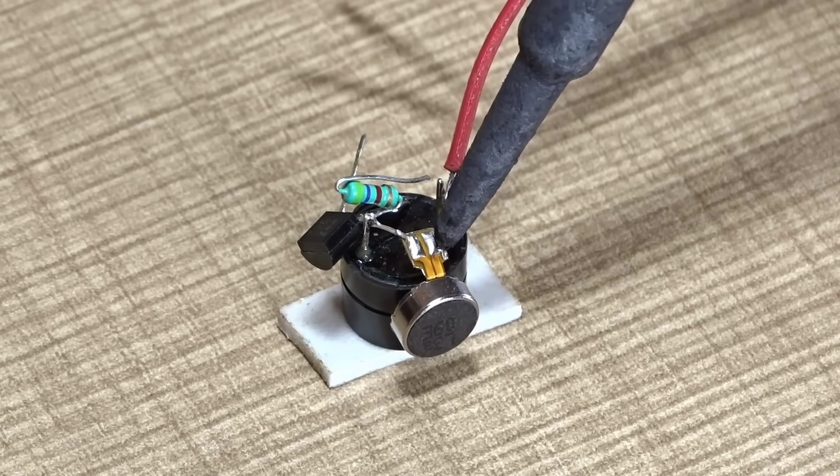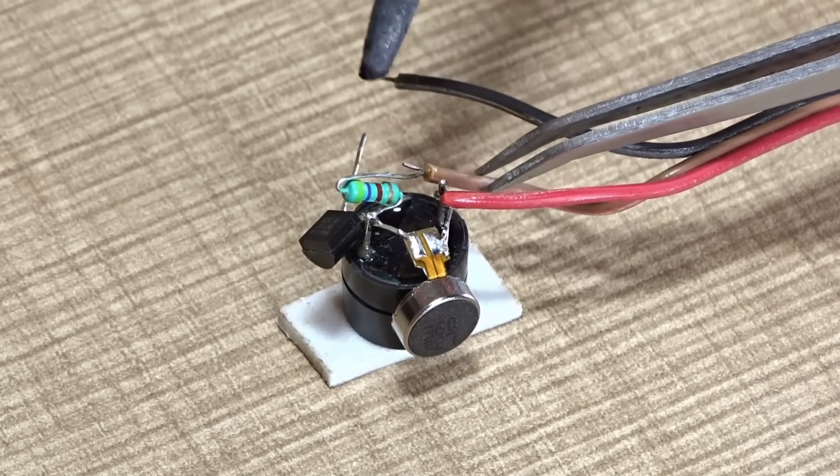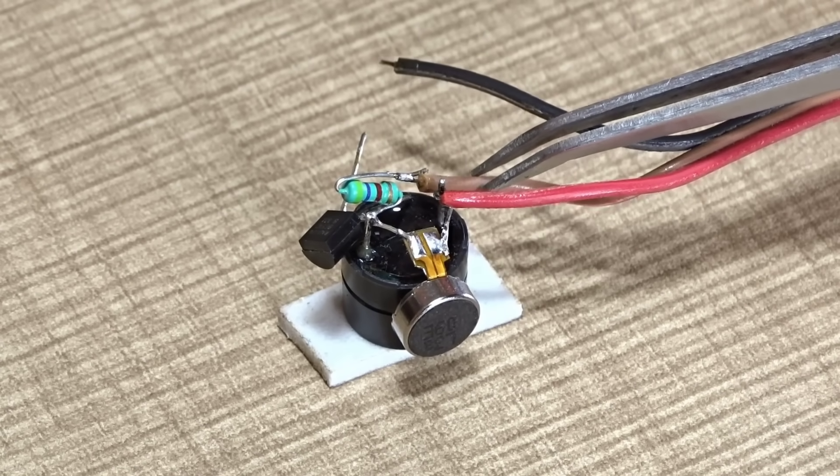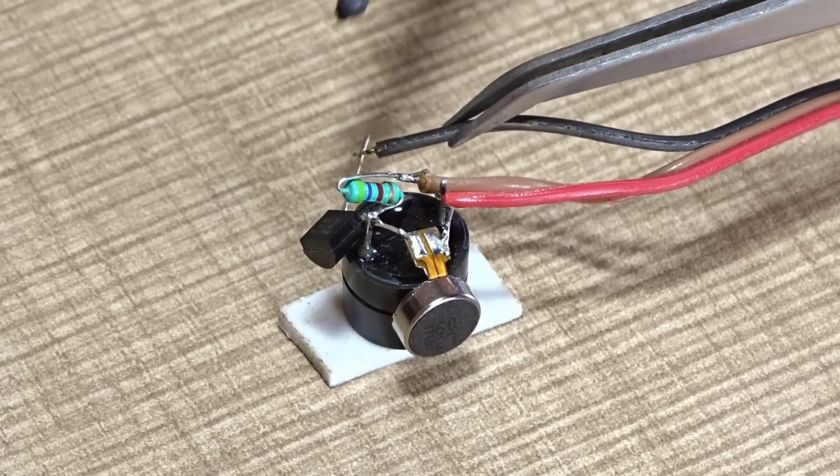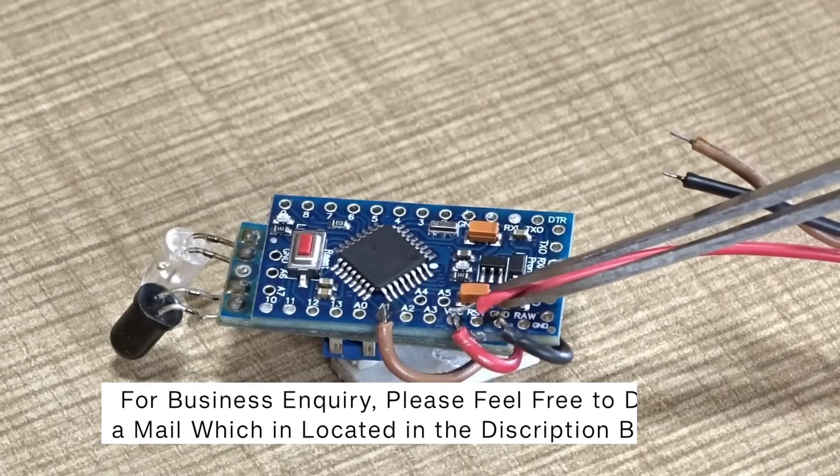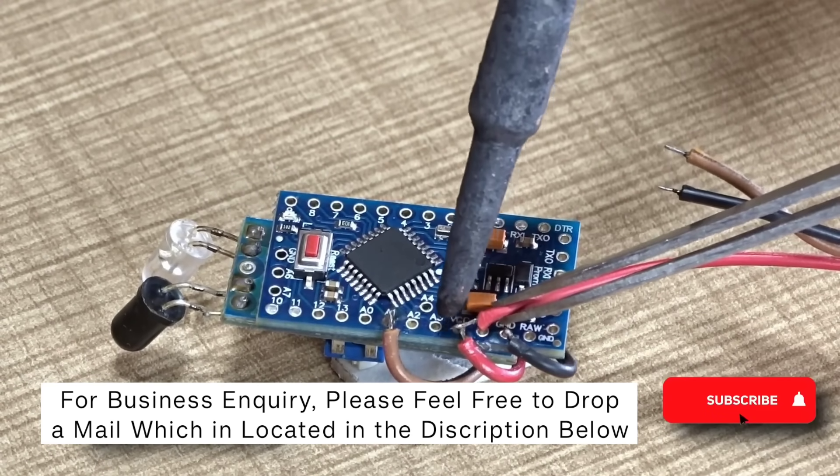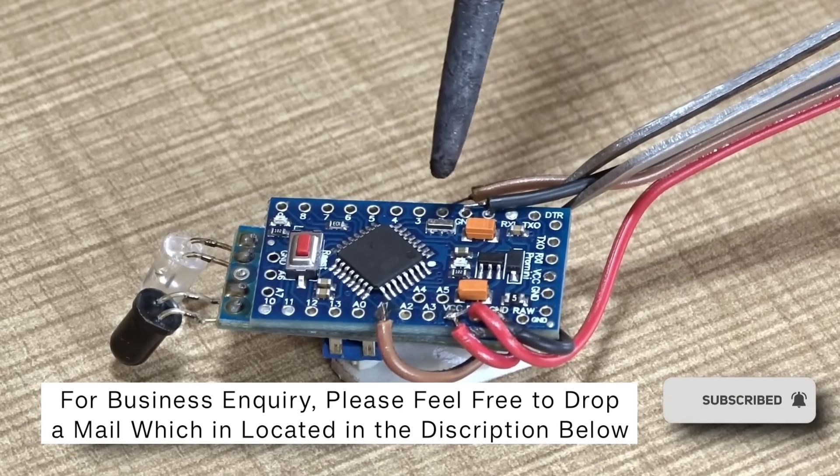Once the physical attachment is done, we move ahead to complete the soldering work for all components. Every component used in this project has been clearly shown and explained at the beginning of the video, so make sure to refer to that section if you need help identifying them. Now we'll connect all the components to the Arduino Pro Mini. Be sure to follow the connection layout exactly as I've done in the demonstration.